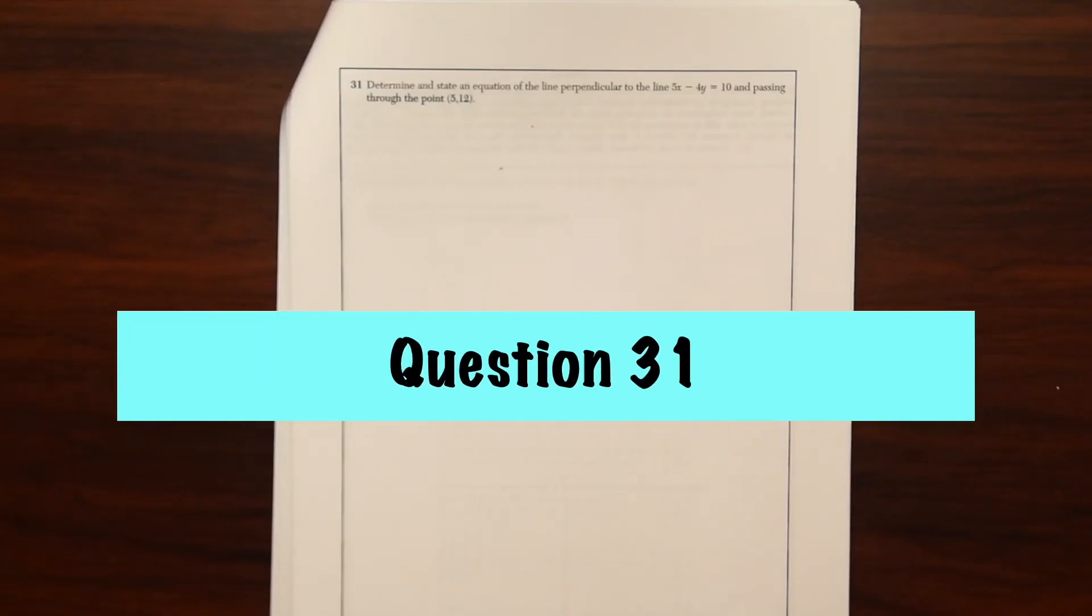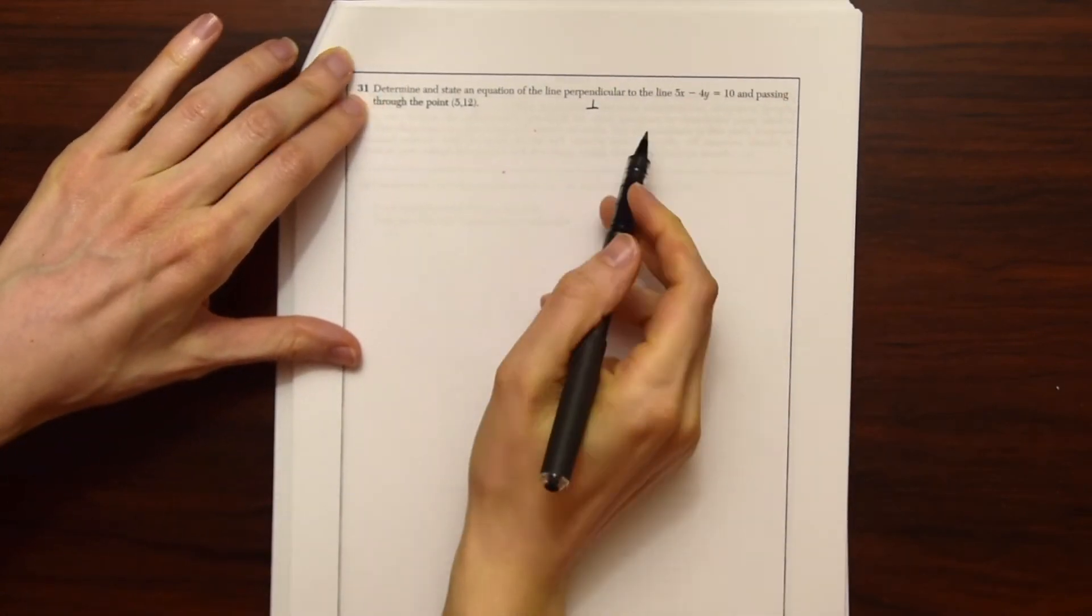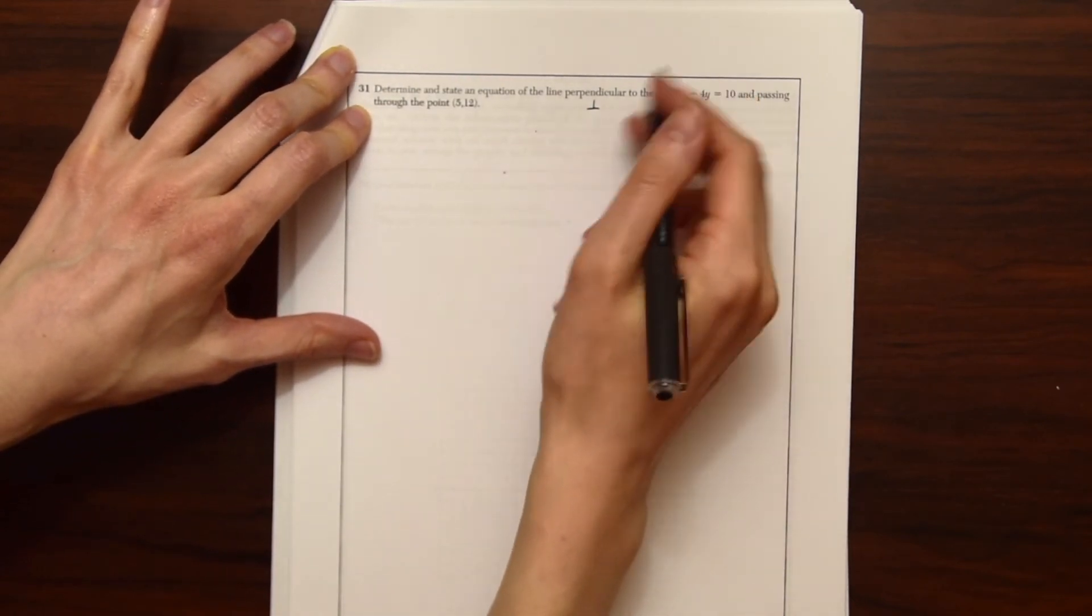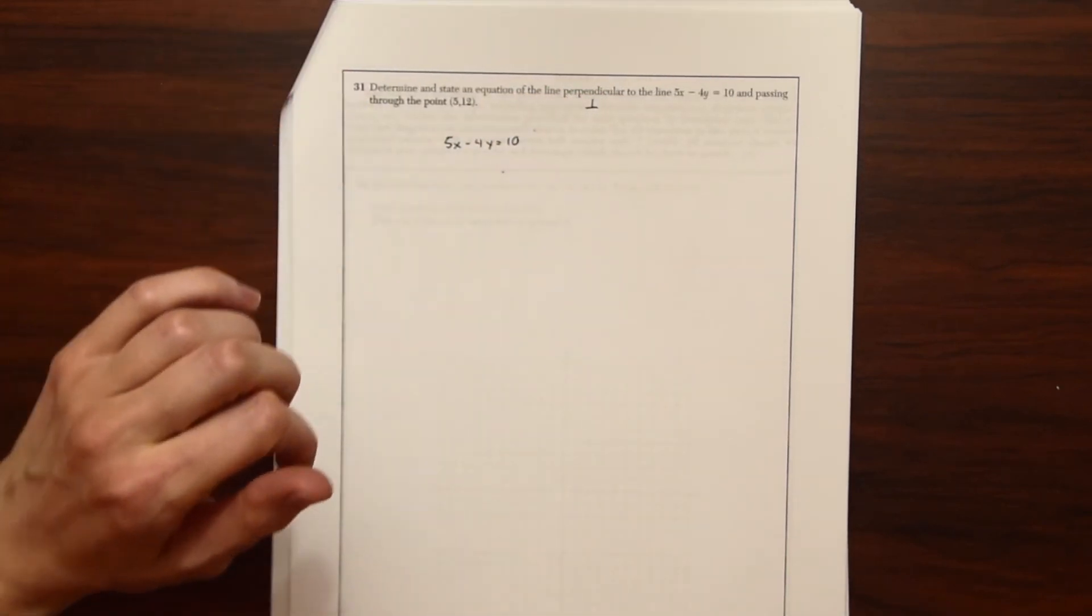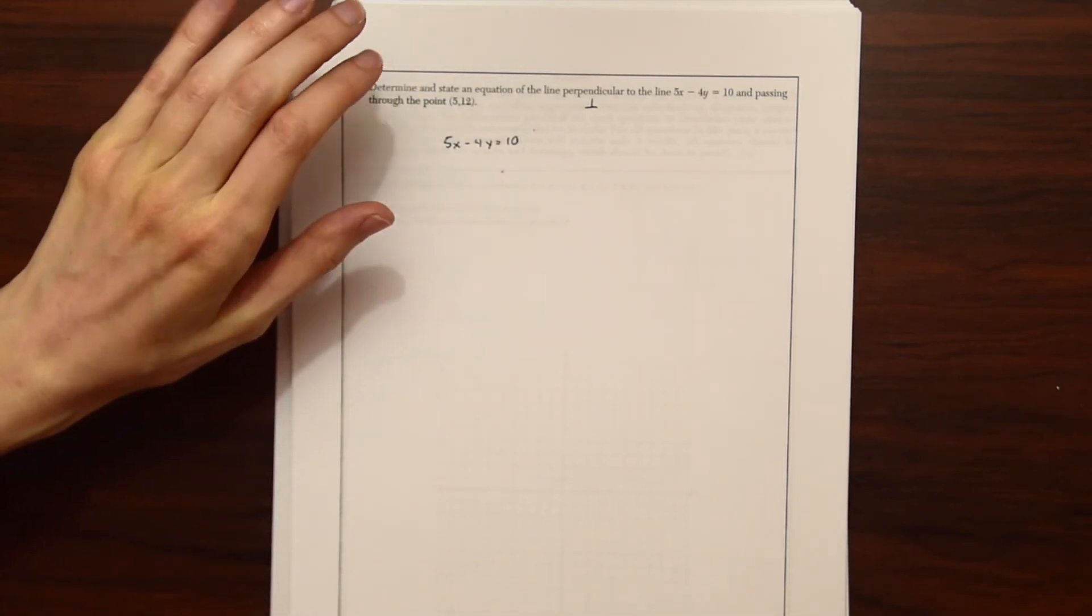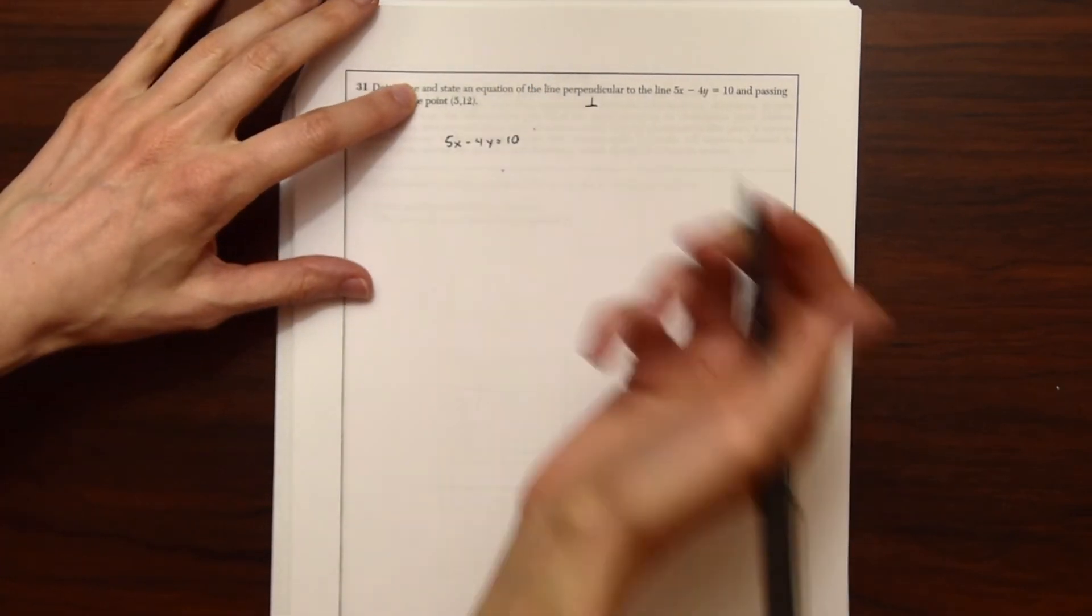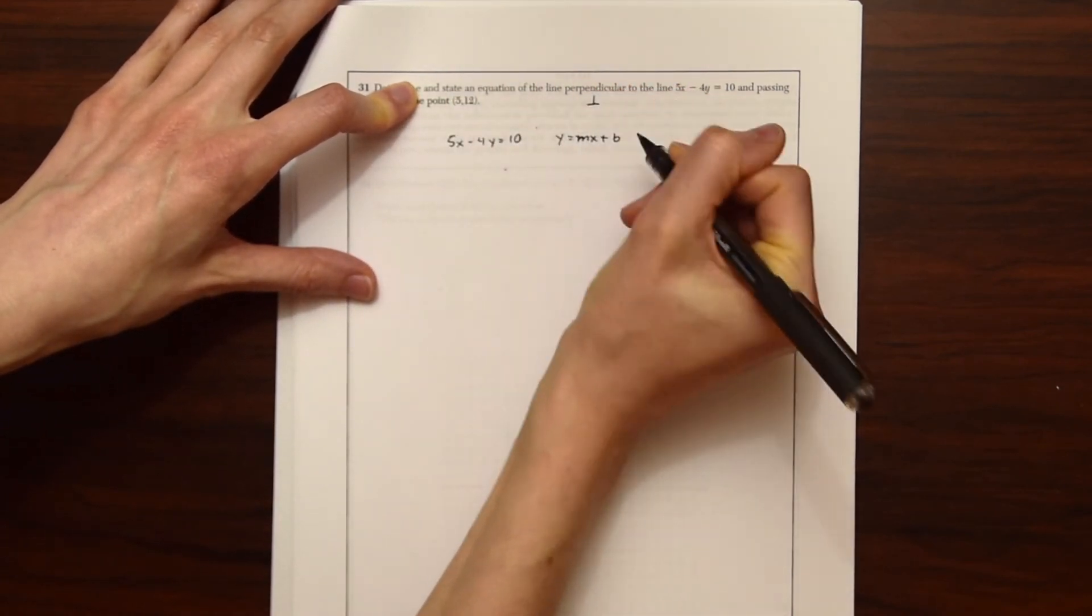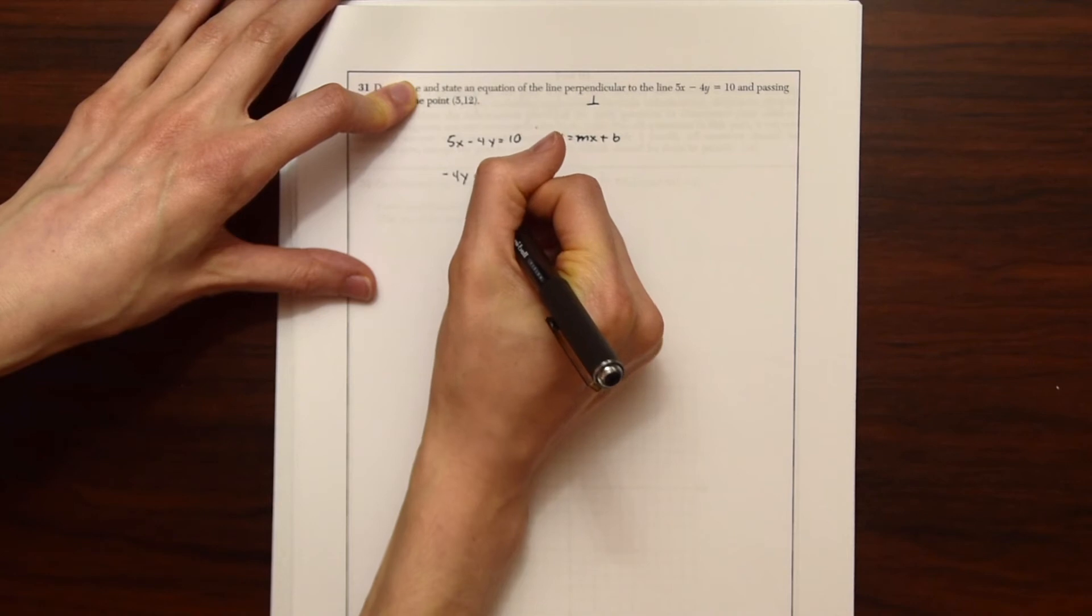Here is question 31. Determine and state an equation of the line perpendicular to the line 5X minus 4Y equals 10 and passing through (5,12). So right away, let's take this 5X minus 4Y equals 10 and move it around into Y equals MX plus B form. I have a video on making lines perpendicular and parallel if you want more examples.